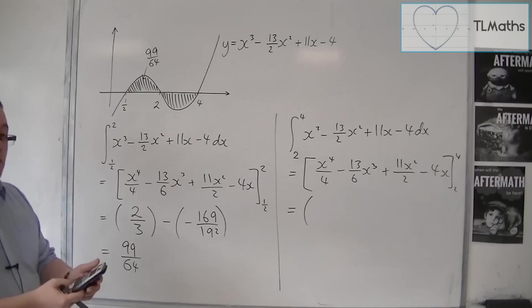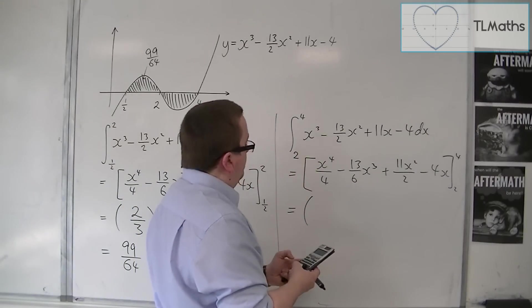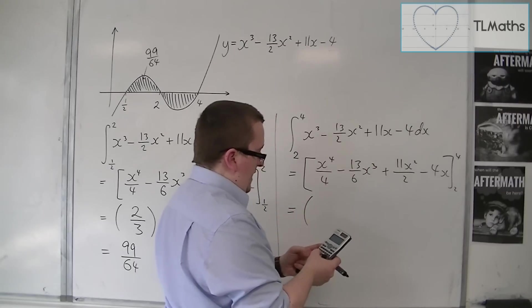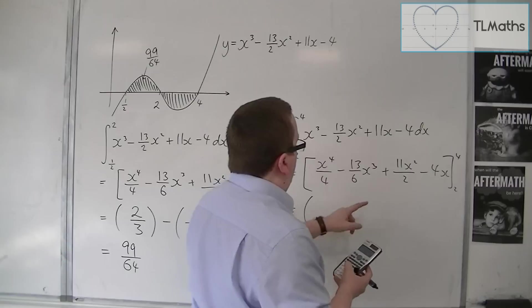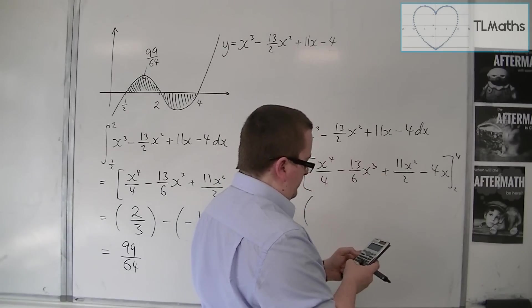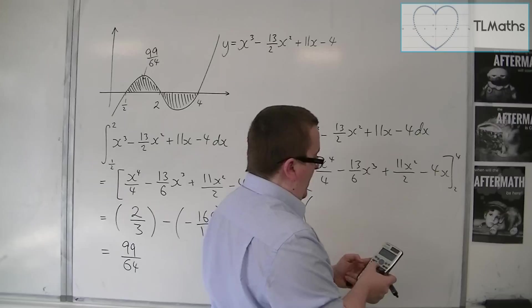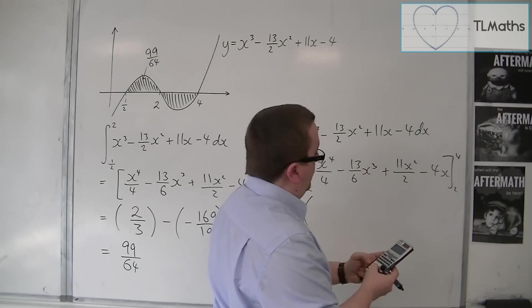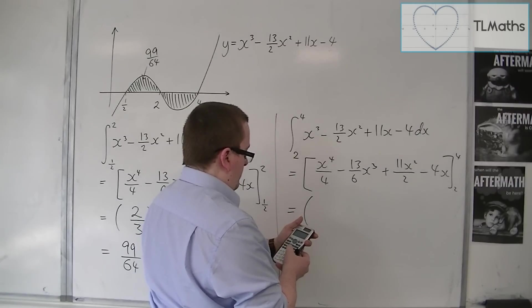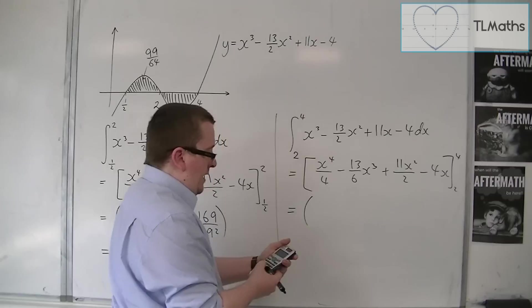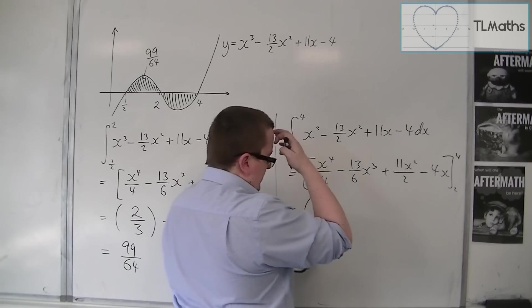So substituting in 4, I'm going to have 4⁴ divided by 4, take away 13/6 times 4³, plus 11/2 times 4². Take away 4 times 4. Conveniently, my calculator has gone into decimals, so that's minus 2 and 2/3.